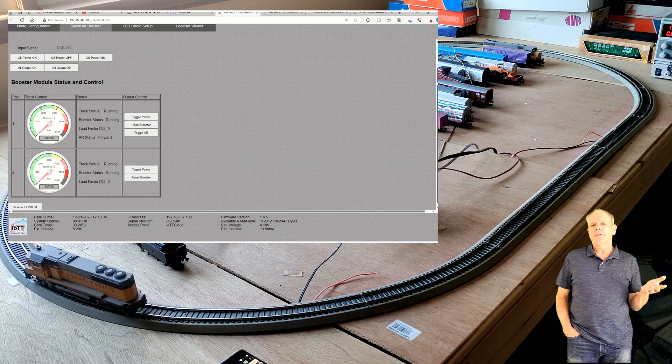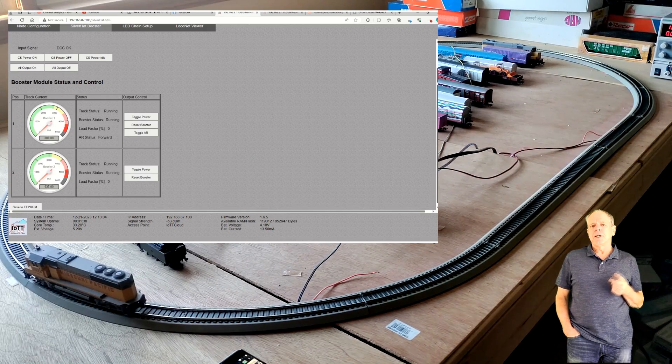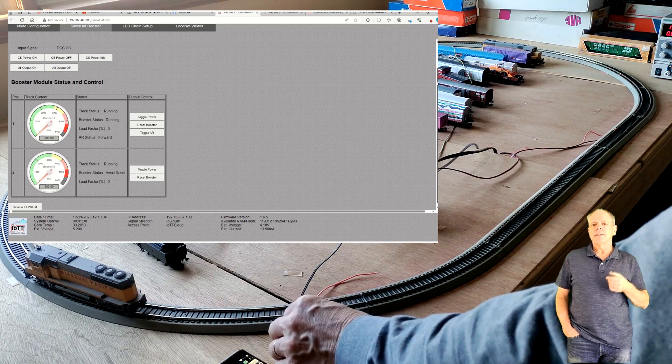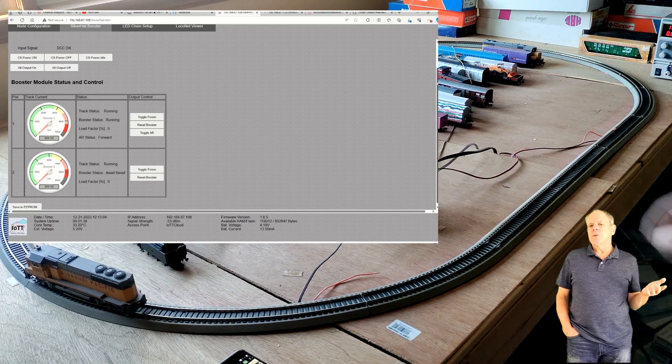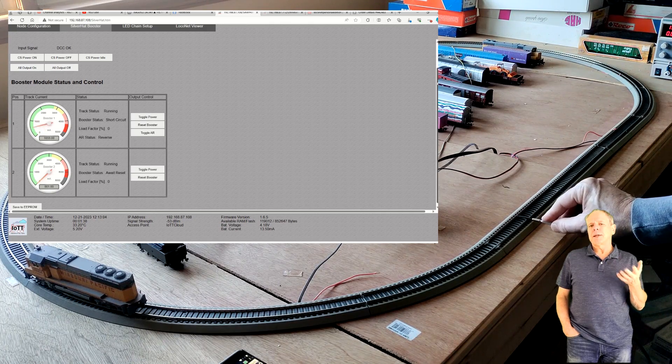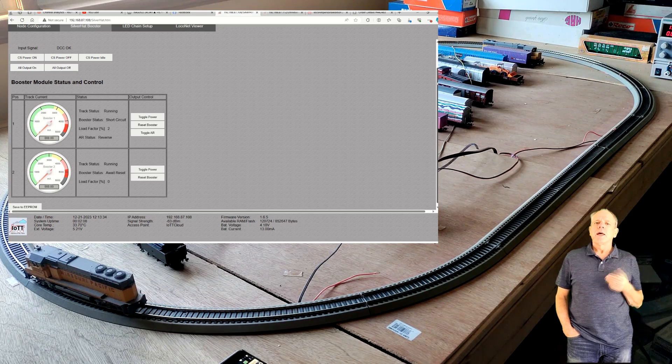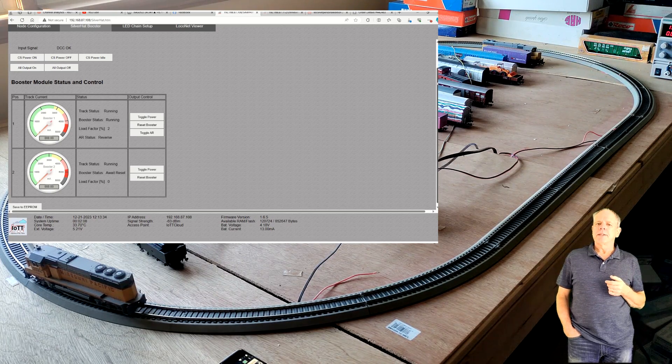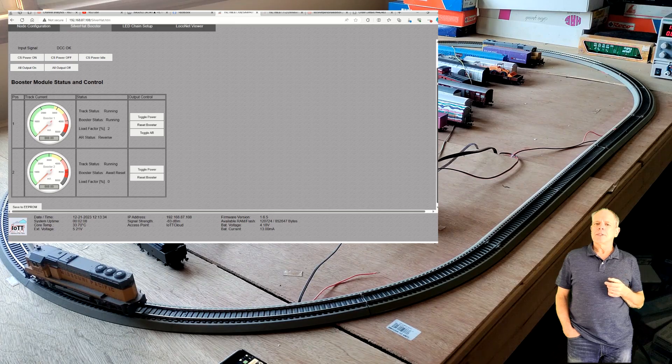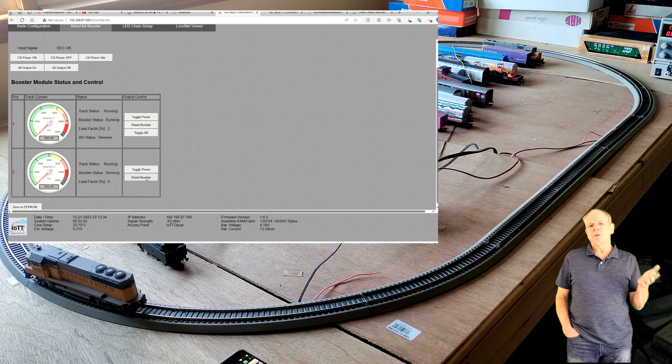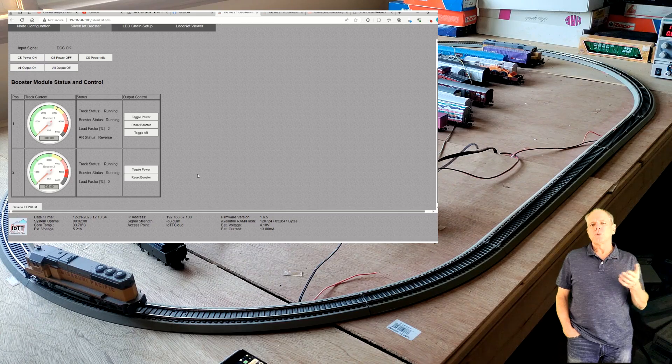If I create a short circuit in the manual reset section, the booster immediately shuts down and displays the short circuit status. When set to autoreset, it keeps trying, although the interval between two tests is getting longer. As soon as the short circuit is removed, the track power status is restored. In the manual section, I need to click the reset button to restore the track power.